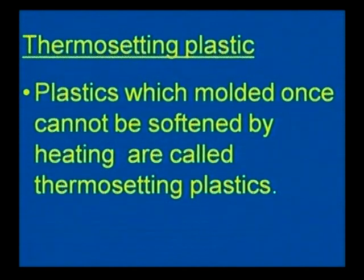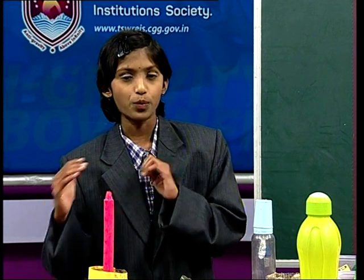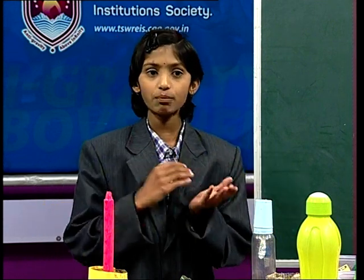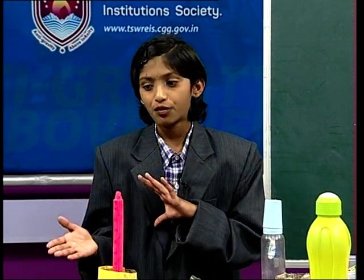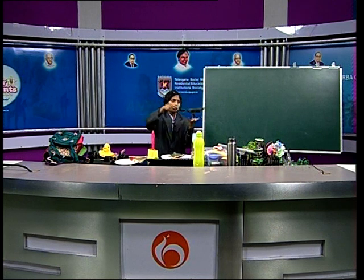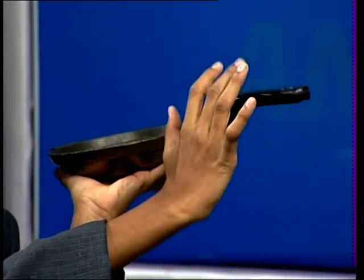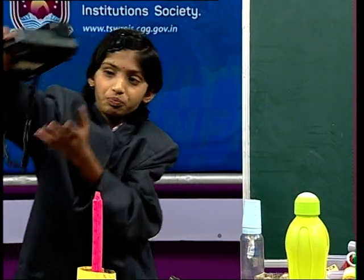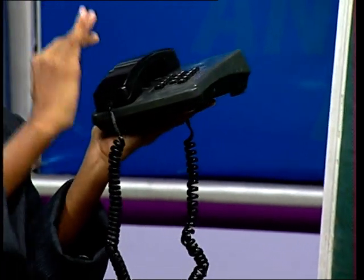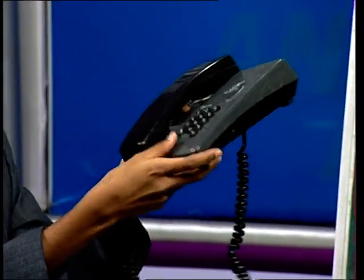Now let us discuss thermosetting plastics. Plastics which, once molded, cannot be softened by heating are called thermosetting plastics. Thermosetting plastics cannot change their shape. For example, bakelite and melamine. Examples of bakelite are switchboards, handles of utensils, and telephones. See here — this handle of utensils is made of bakelite. It does not change its shape.